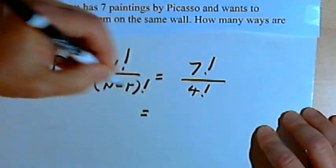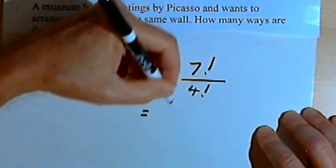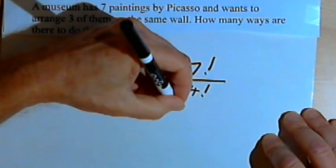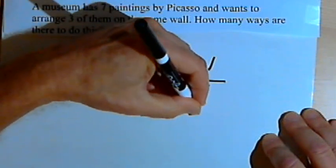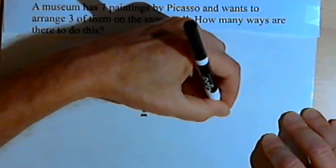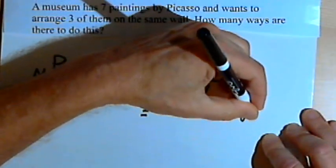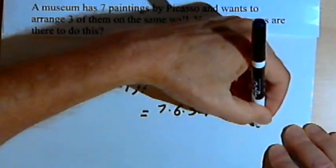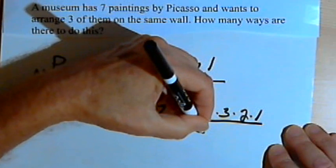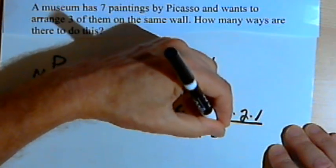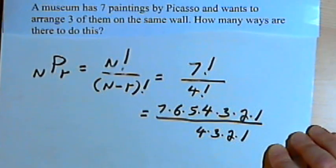Let's see if we can figure this out without the calculator. So 7 factorial, I could rewrite that as 7 times 6 times 5 times 4 times 3 times 2 times 1. And 4 factorial is going to be 4 times 3 times 2 times 1.